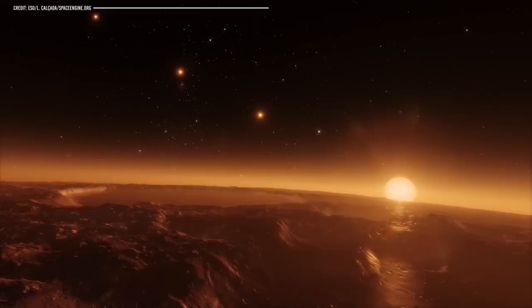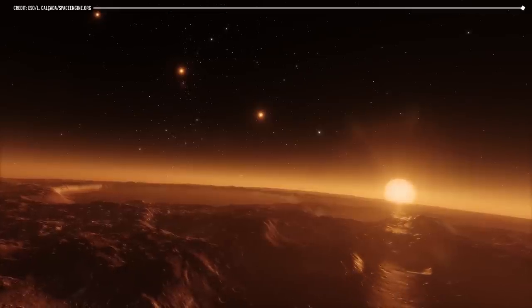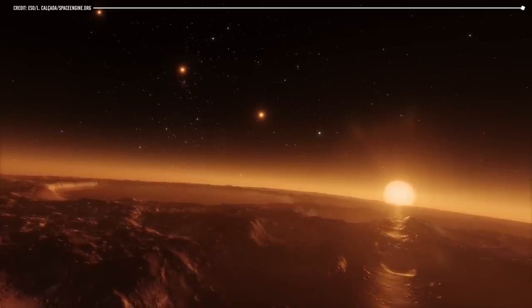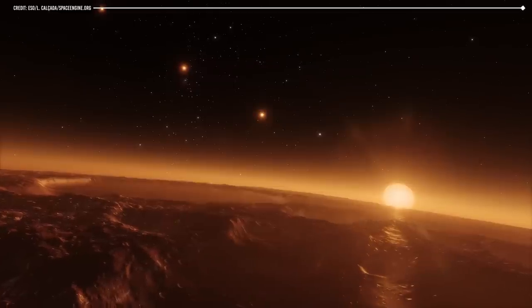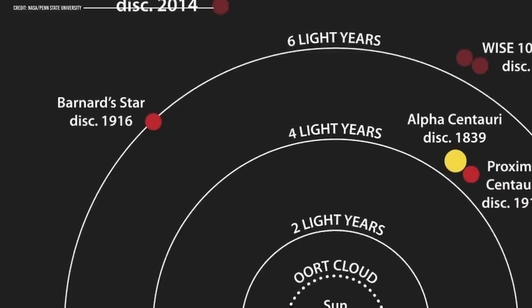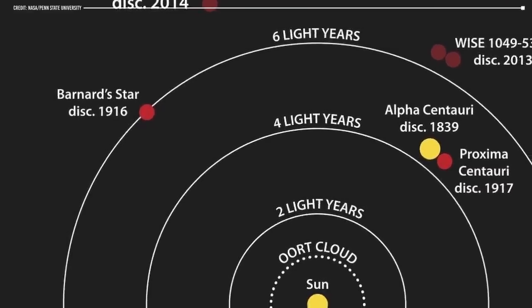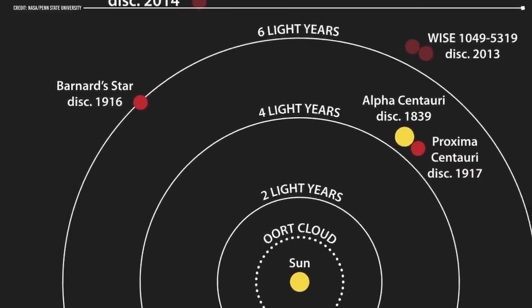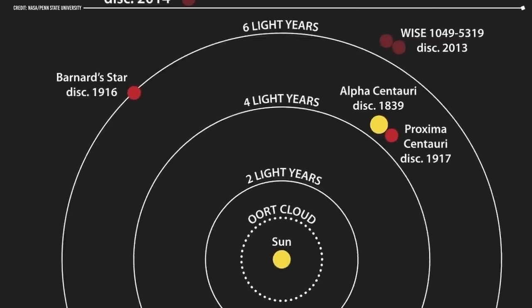For example, scientists have found that red dwarfs are much more common in the galaxy than other types of stars. They also tend to have much longer lifetimes than more massive stars like the Sun. Because Barnard's star is one of the closest red dwarfs to us, it provides a great opportunity to study these stars in more detail.